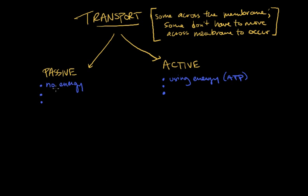So there's no energy in passive transport. And we say that it moves down the concentration gradient. This is my abbreviation for concentration. The concentration gradient. So in other words, it moves from high concentration to low concentration.